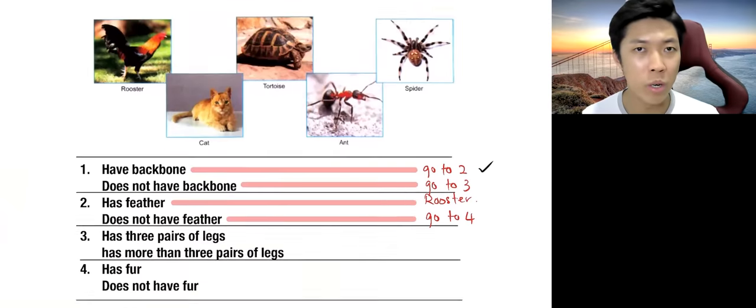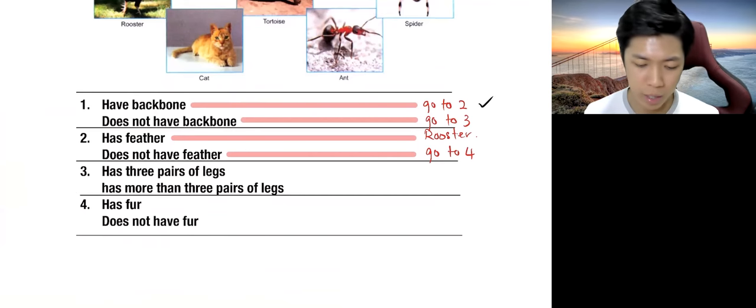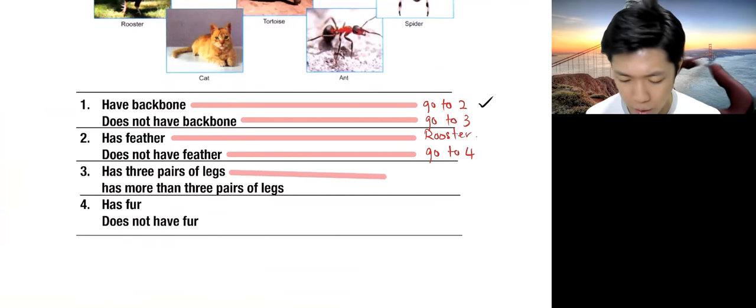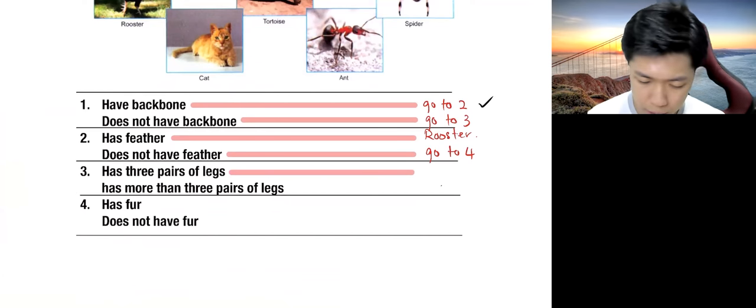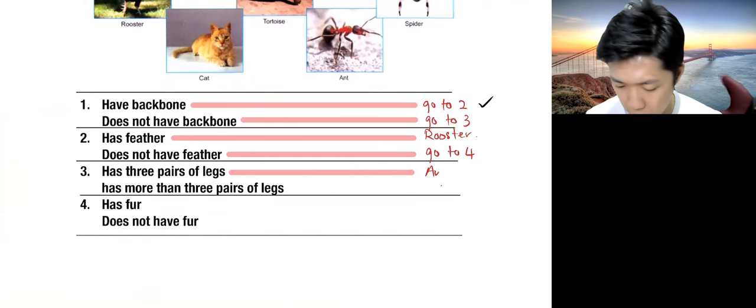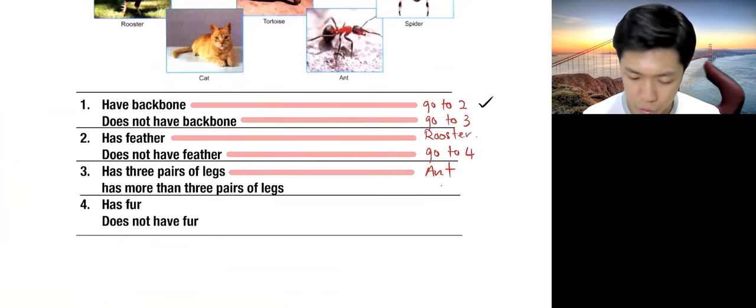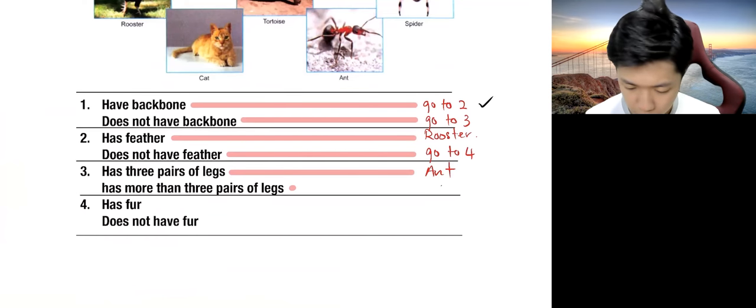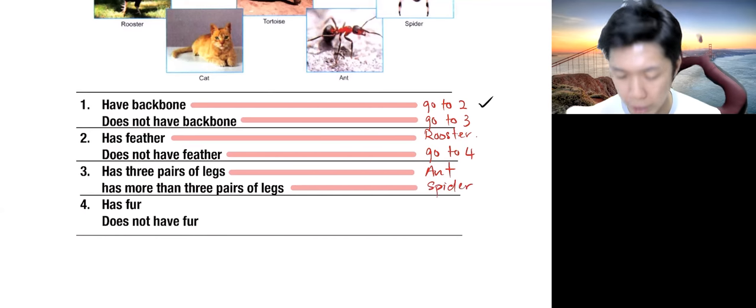So it depends what you want. So let's say I'm going to go for three pairs of legs and more than three pairs of legs. So three pairs of legs goes to ant. Well, has more than three pairs of legs goes to spider.